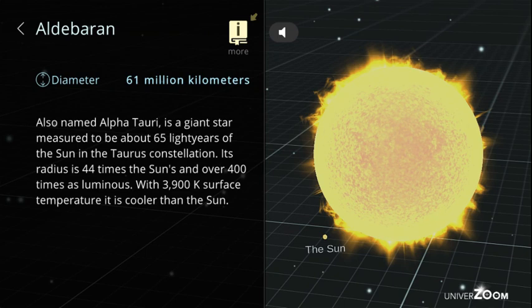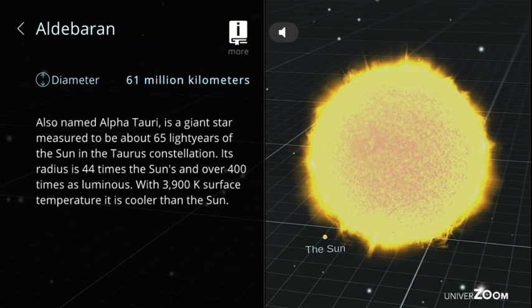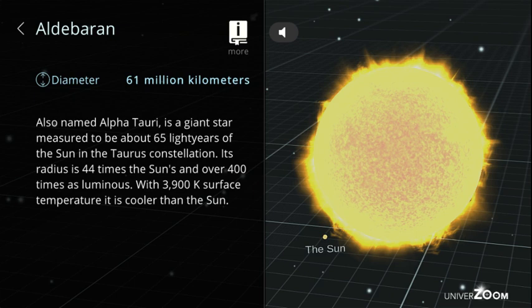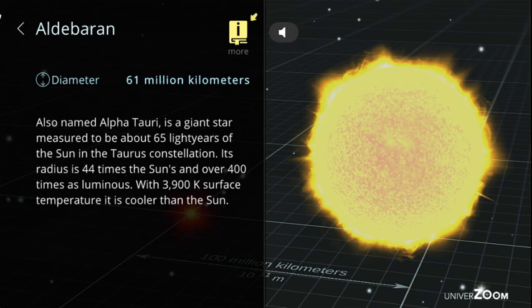Aldebaran, diameter: 61 million kilometers. Also named Alpha Tauri, is a giant star measured to be about 65 light-years from the sun in the Taurus constellation. Its radius is 44 times the sun's and over 400 times as luminous. With 3,900 K surface temperature it is cooler than the sun.